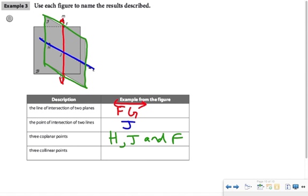Finally, we're being asked for three collinear points. Remember, collinear points are three points that are all along the same line. And that's points F, J, and G.